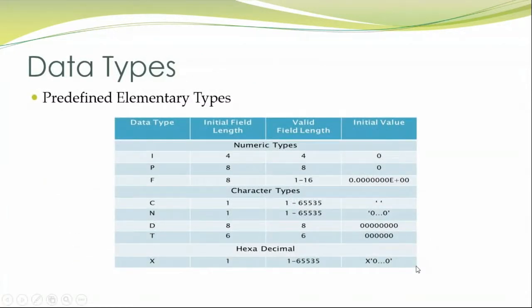Moving on to the predefined elementary types of data which I have told you before. This table shows you what are their capabilities. When you speak about integer which comes under the numeric type, integer's initial field length is 4, and the maximum number that it can hold is 4. The initial value is always 0. Whereas a packed decimal which is P has got initial field length of 8 and the maximum length of 8 and the initial value of 0.